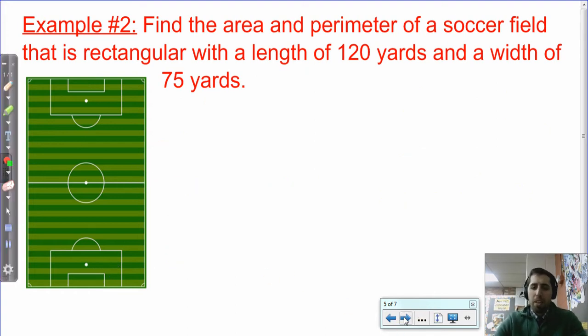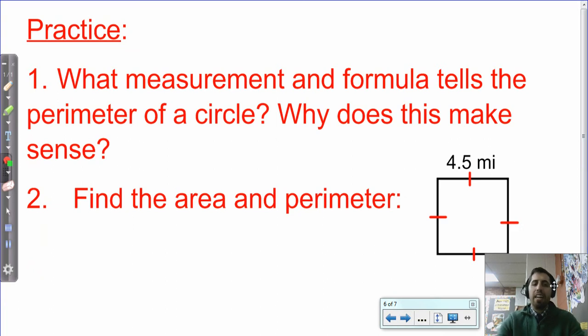So those are some examples. They should be pretty familiar to you. But I ask you a question, number one, because we're doing this on the basis of getting ready for more complex figures. But we've already done circles, so you need to know this. What measurement, so tell me the name of the measurement that we discover for circles, and what is the formula for that that tells us the perimeter of a circle? We call it something different. That's why I'm asking you to name the measurement. But what's the same as the perimeter of a circle, and why does it make sense? So think of the definitions that will help you. The second part is to find the area and perimeter of this. And I gave you the top length, or the top base I should say, is 4 and 5/10 miles. And so I only gave you one of the sides, but you should be able to figure out the rest. And I'll see you tomorrow in class.